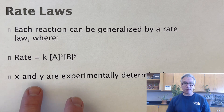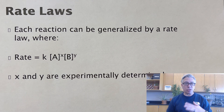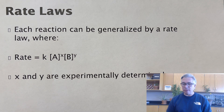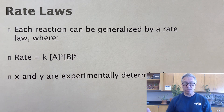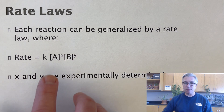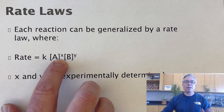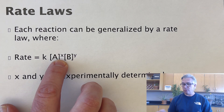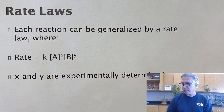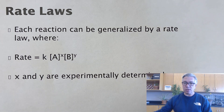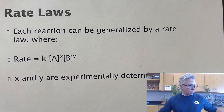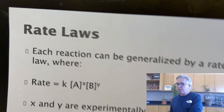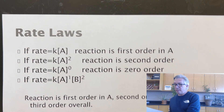X and Y have to be experimentally determined. Sometimes it's tempting, if in a balanced chemical equation there's a coefficient of 2, to say that the order is 2, but it's not. There's often no correlation at all. So X and Y are experimentally determined. Let's look at a couple of general examples to see how that would affect anything.